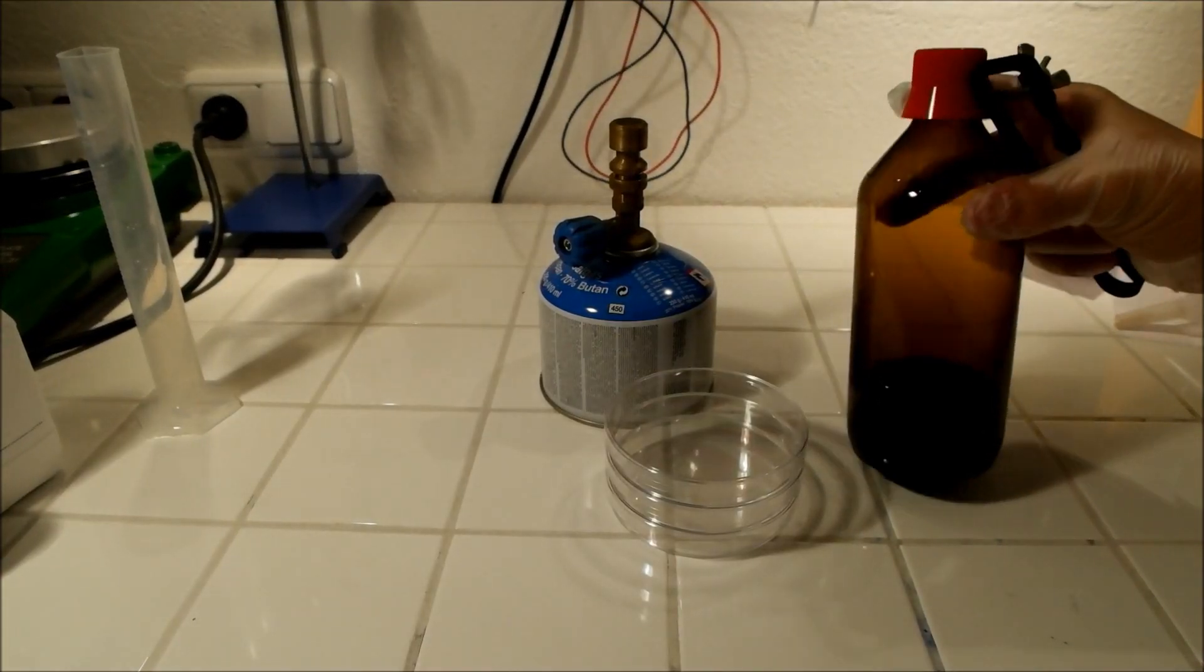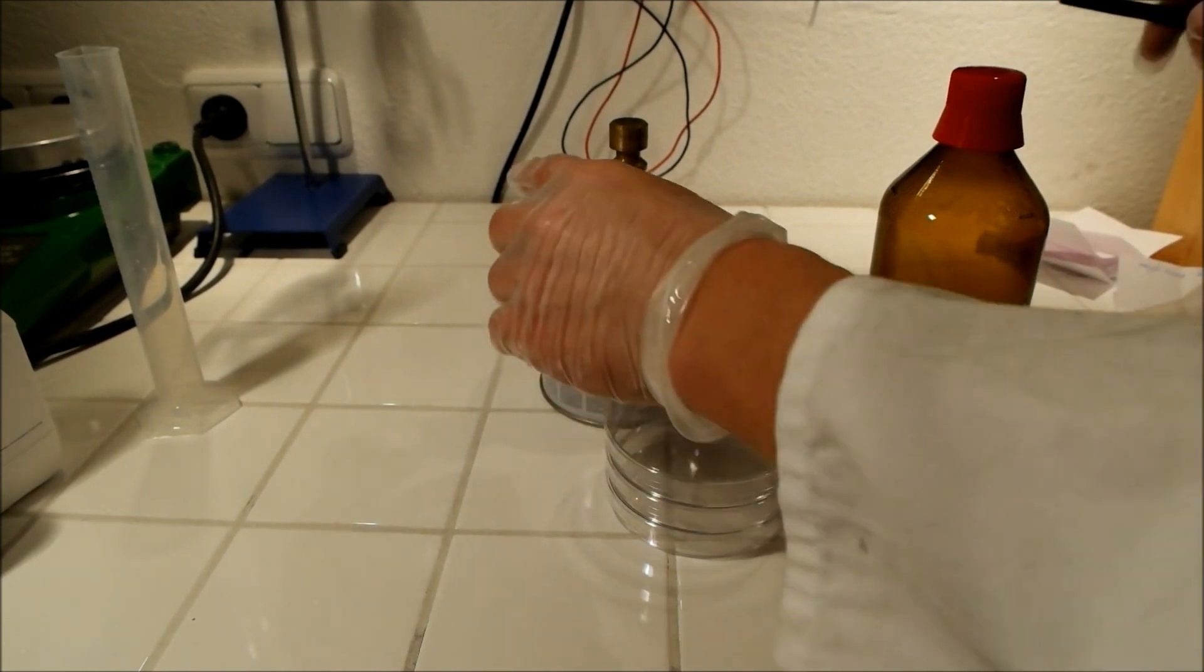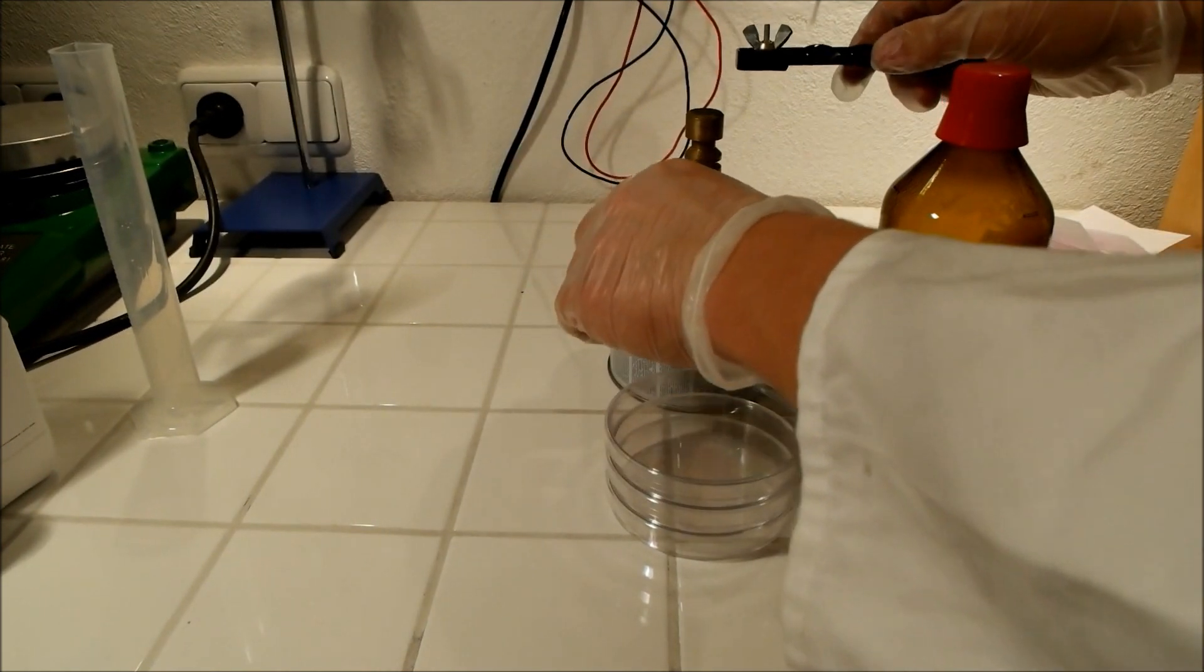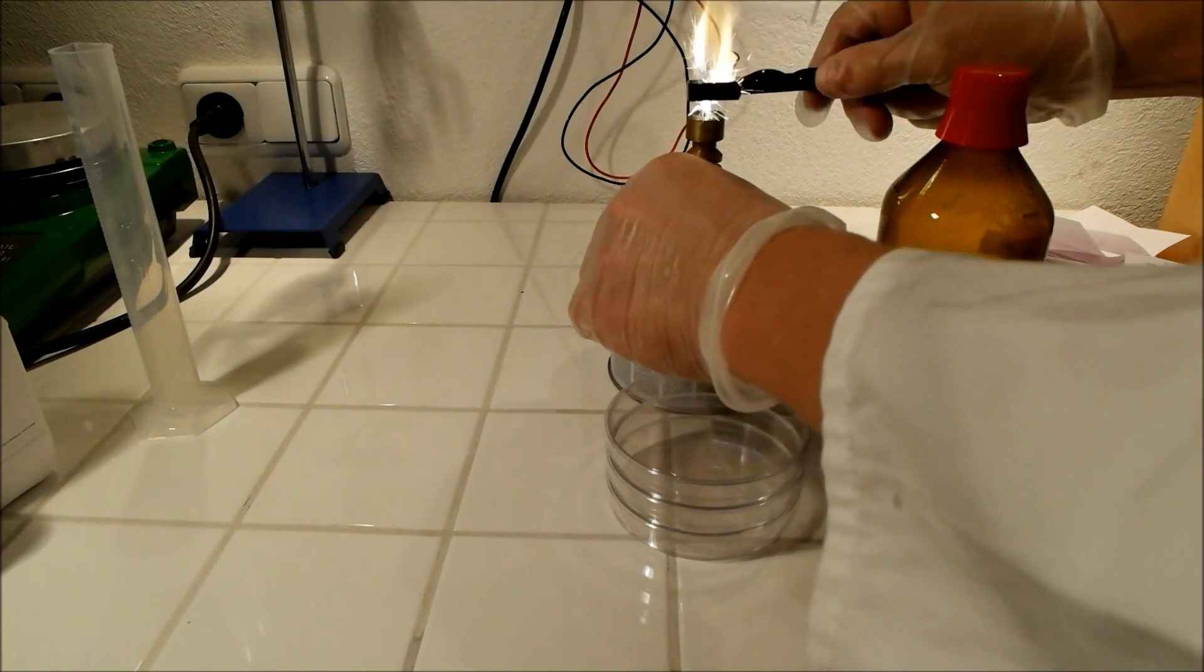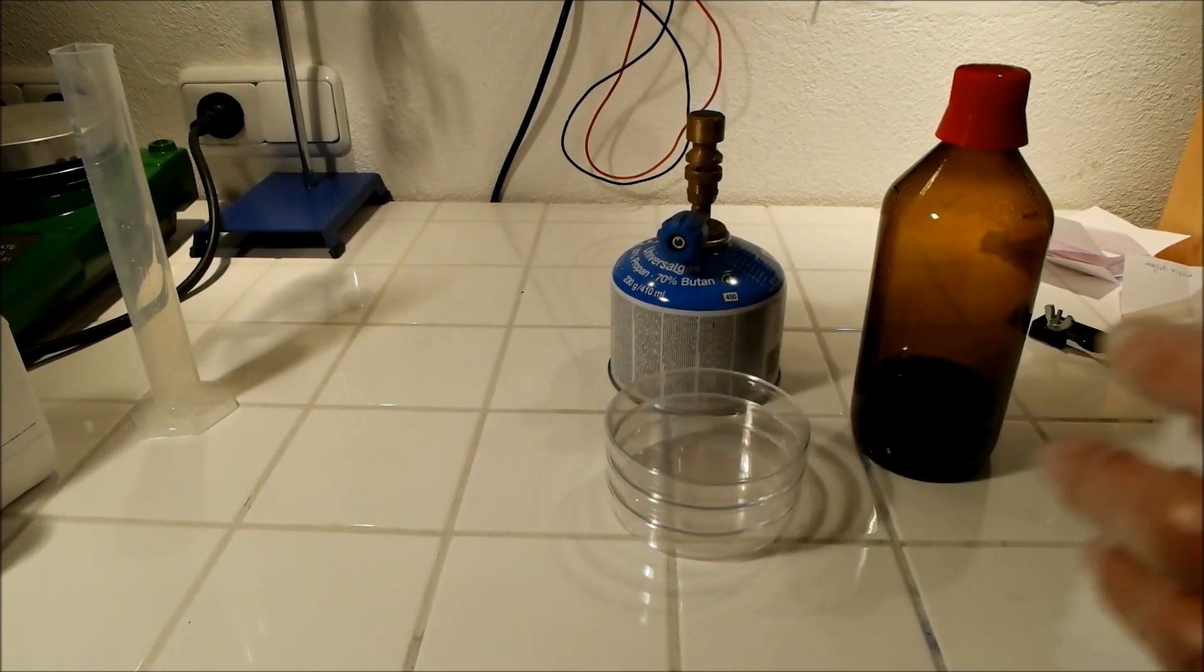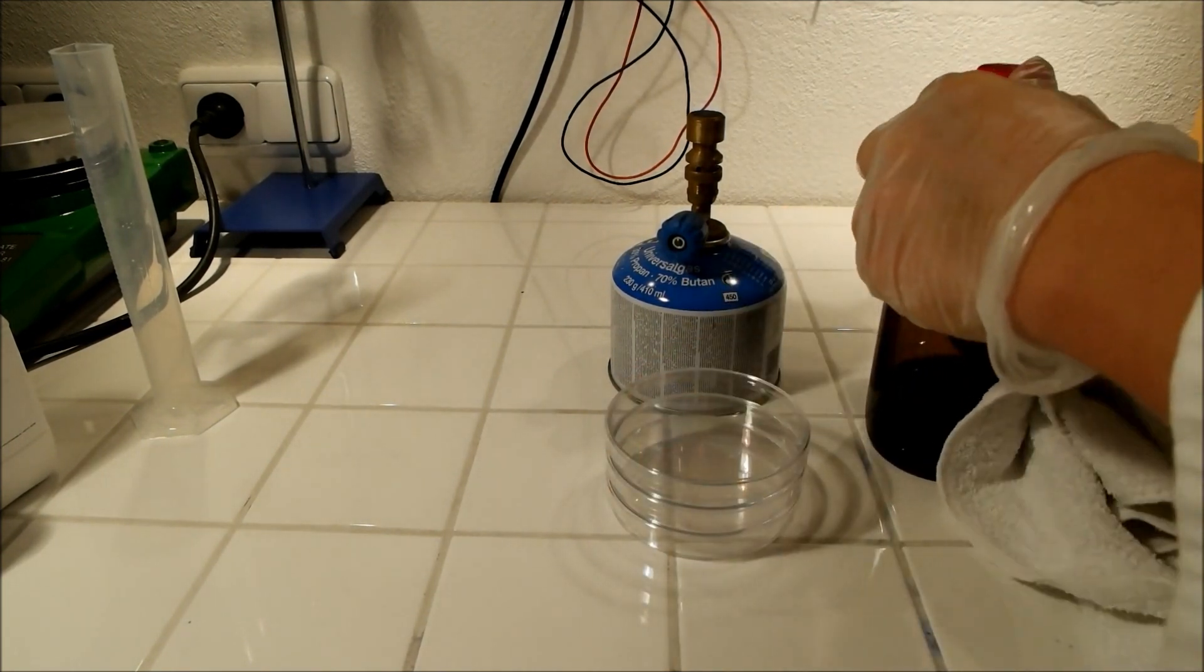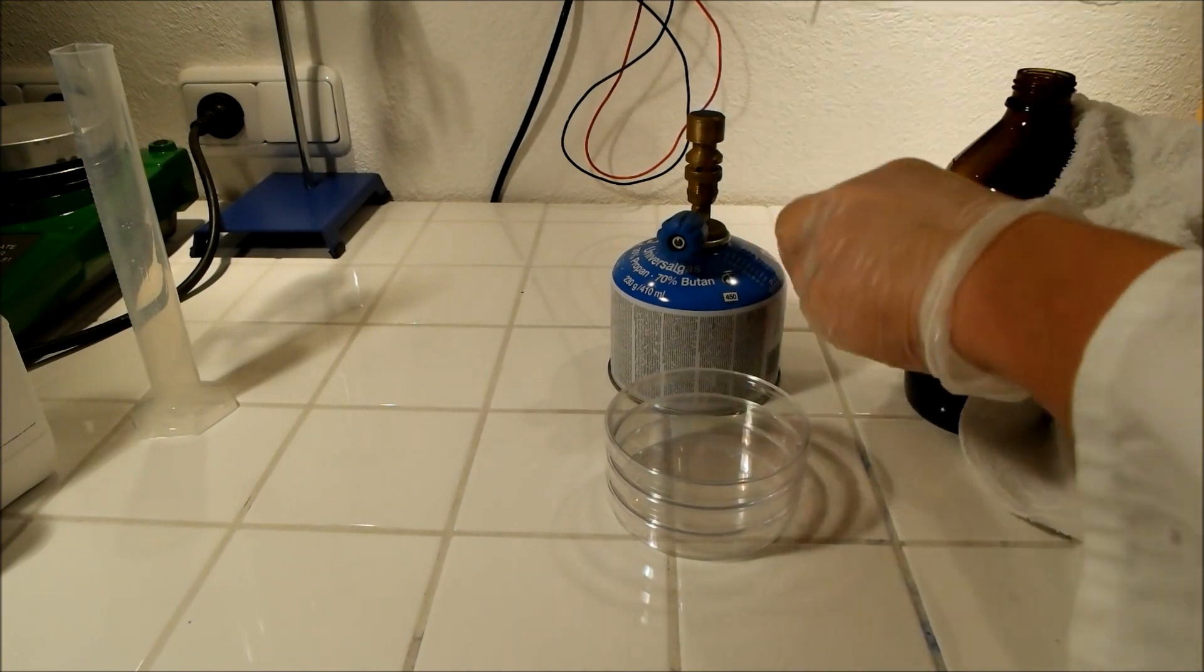Now, after the microwaving, your solution should be, after a few minutes, around 60 degrees hot. Now you can light your Bunsen burner. And with the help of a towel, just pour the agar solution in your plates.